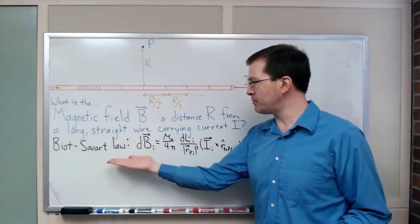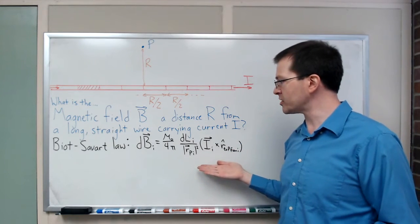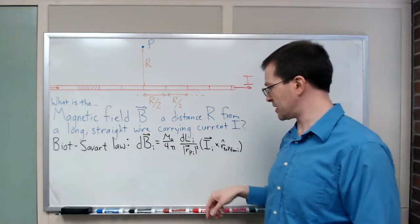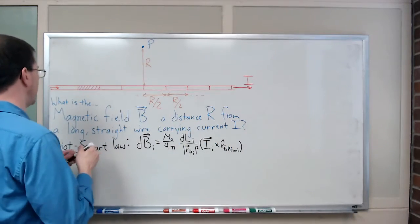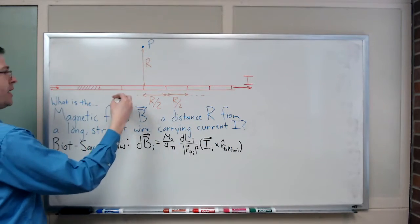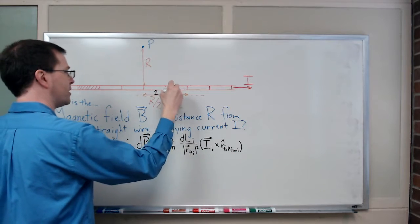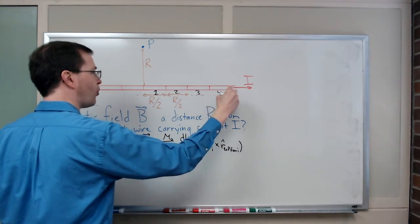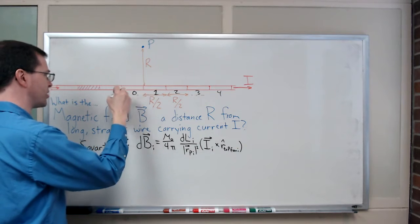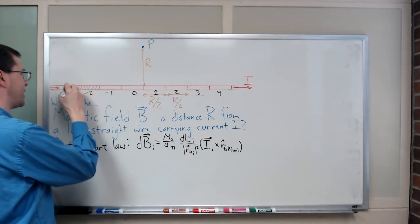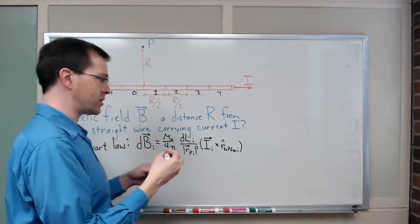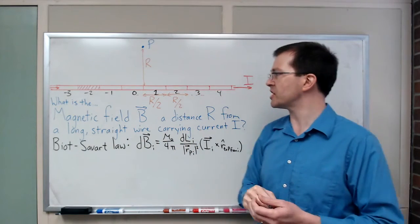What I'm going to do is take the Biot-Savart law. If I were to number these, I could call this one 1 and 2 and 3 and 4 going on. I could call this one 0 and minus 1 and minus 2 and minus 3 in that direction. If I number them all, number all these pieces.